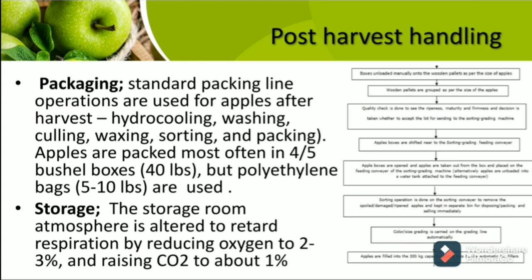Post-harvest handling: Standard packaging line-up procedures are used for apples after harvest. Hydro-cooling, washing, culling, waxing, sorting, and packaging are done. Apples are packed most often in 4 to 5 bushel boxes of 40 pounds, but polythene bags of 5 to 10 pounds are also used. For storage, the room atmosphere is altered to retard respiration by reducing oxygen to 2 to 3 percent and raising carbon dioxide to about 1 percent, to ensure that ethylene production is low, as apple is a climacteric fruit. A flow chart explaining post-harvest handling is provided.